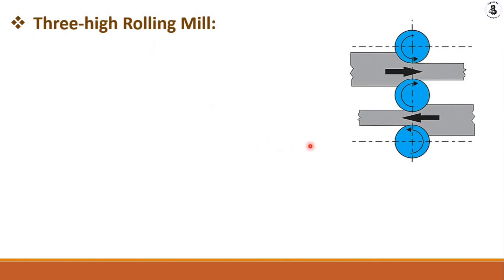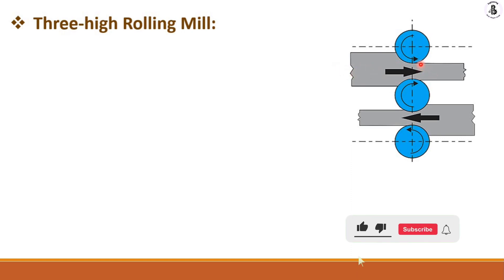The second type is three-high rolling mills. As the name suggests, three rolls are used to convert raw material into desired shape and size. If you want to reduce a large amount of cross-sectional area, you can use three-roll mills. In the first pass, the material contacts rolls one and two; after completing movement from one end to another, it reverses, giving more reduction per cycle than a two-high mill.